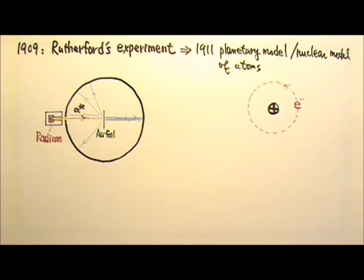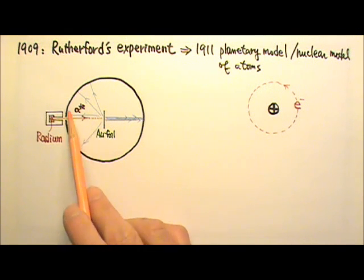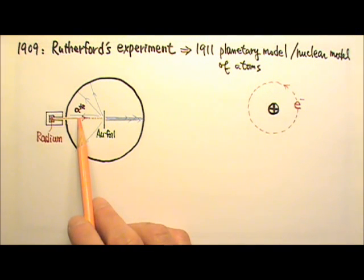It was known at the time that alpha particles are positively charged, and each has a mass about 7300 times that of an electron. It was found later that alpha particles are helium nuclei.